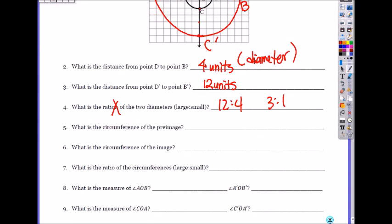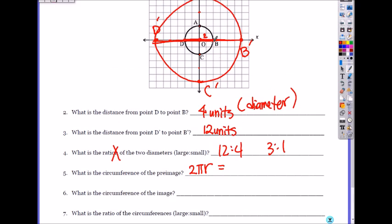What is the circumference of the pre-image? How do you find the circumference? It is 2πr. So pre-image, what's the radius of the pre-image? 2. So it's 2 times π times 2, which is 4π. Circumference, the perimeter of the circle, the length around the circle.